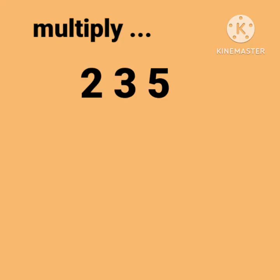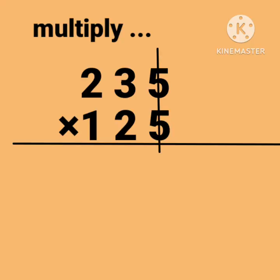Now multiplying 235 by 125. First we multiply 5 by 5, which equals 25. Write 25's 5, carry 2. Now cross multiply.